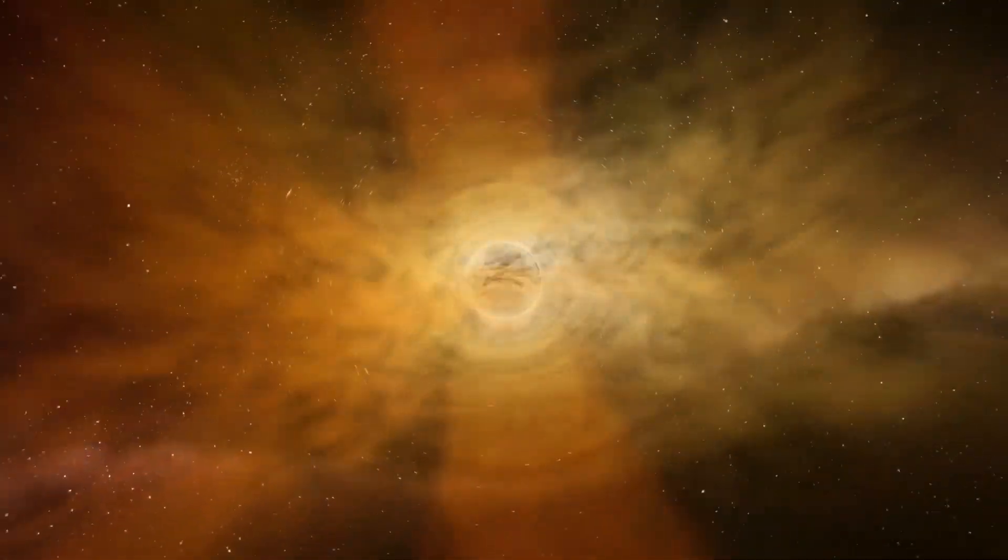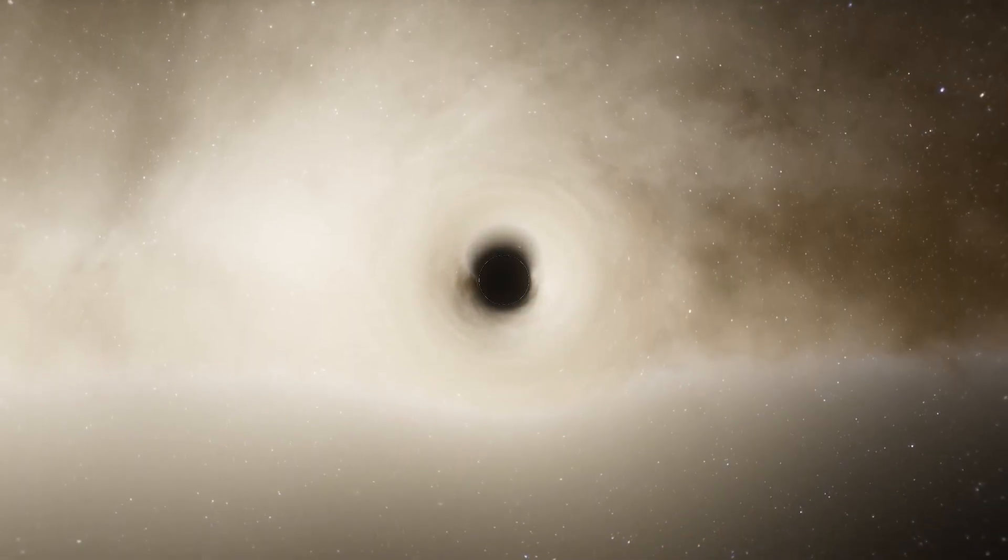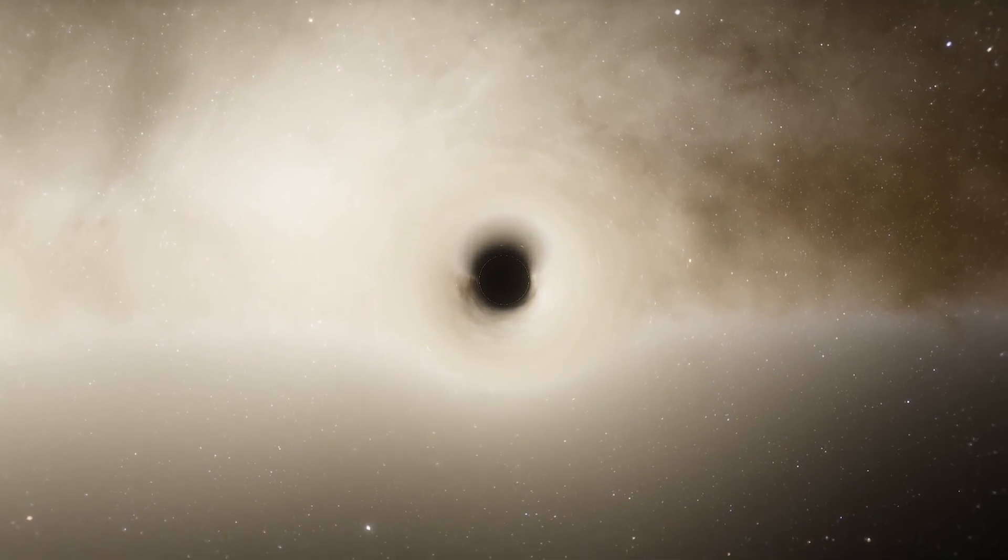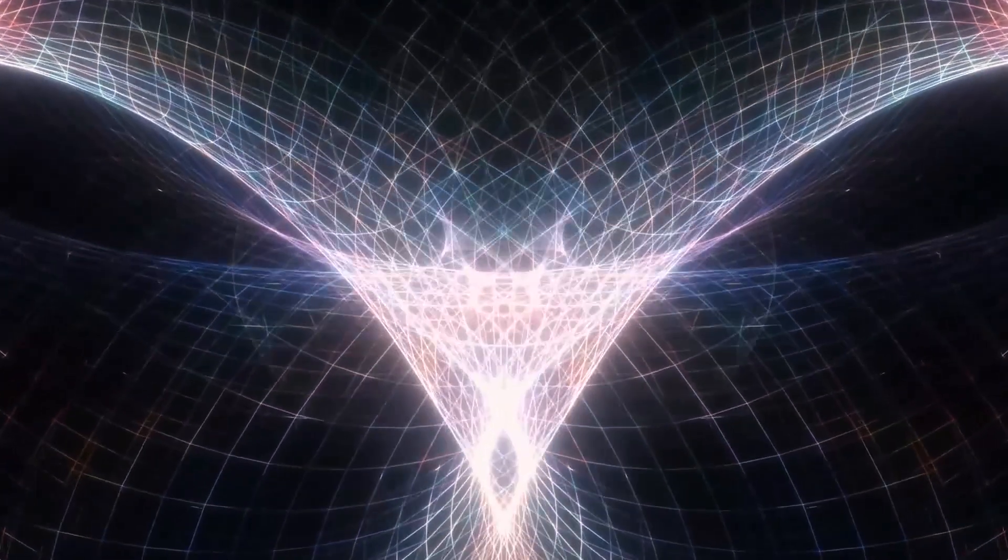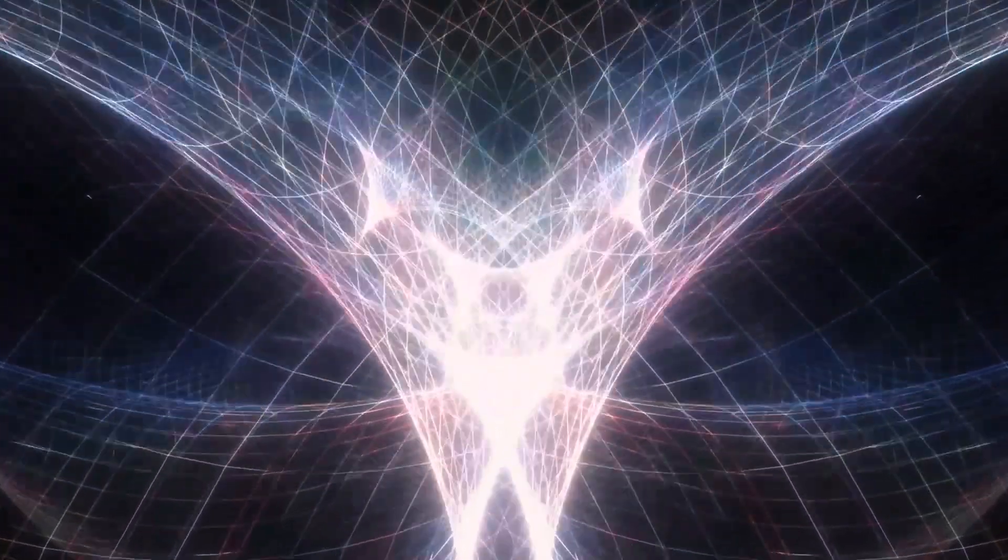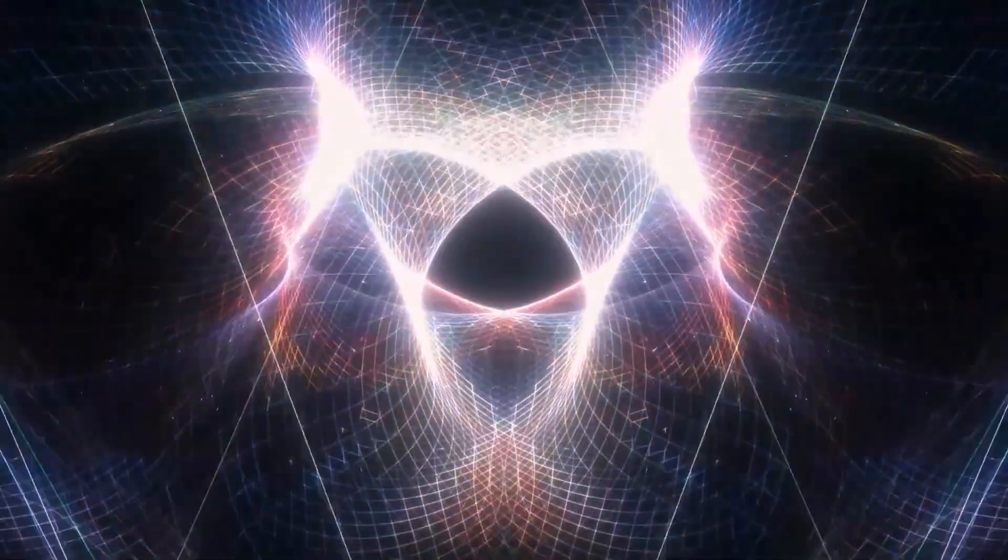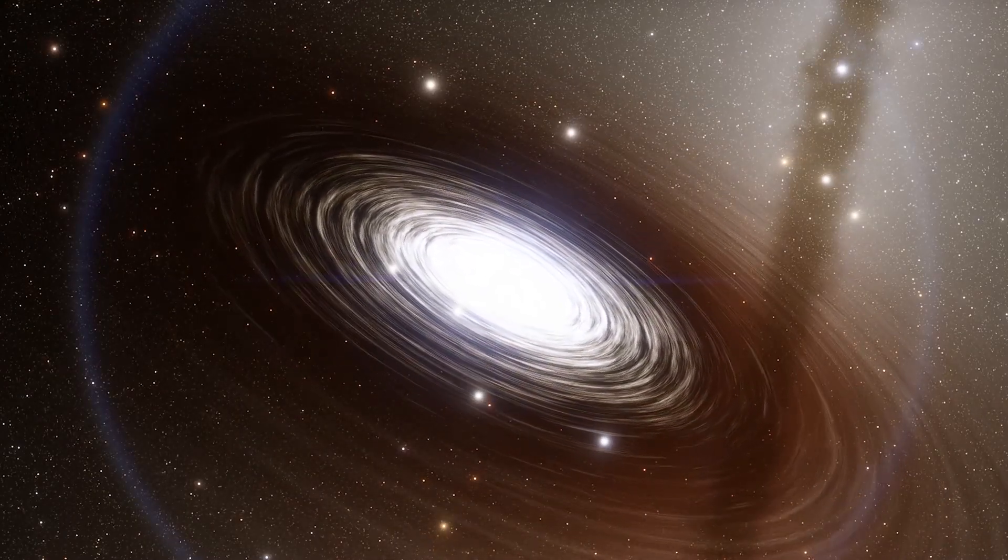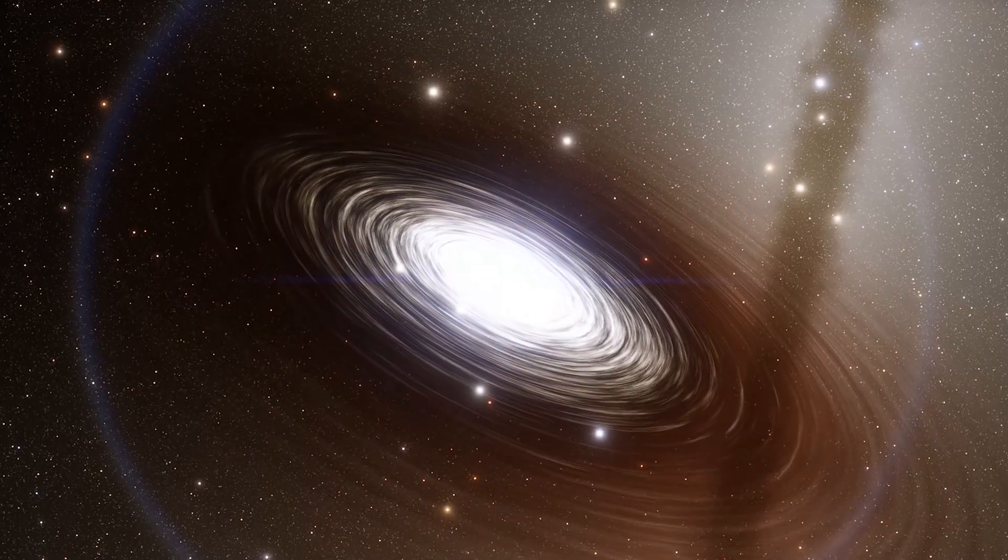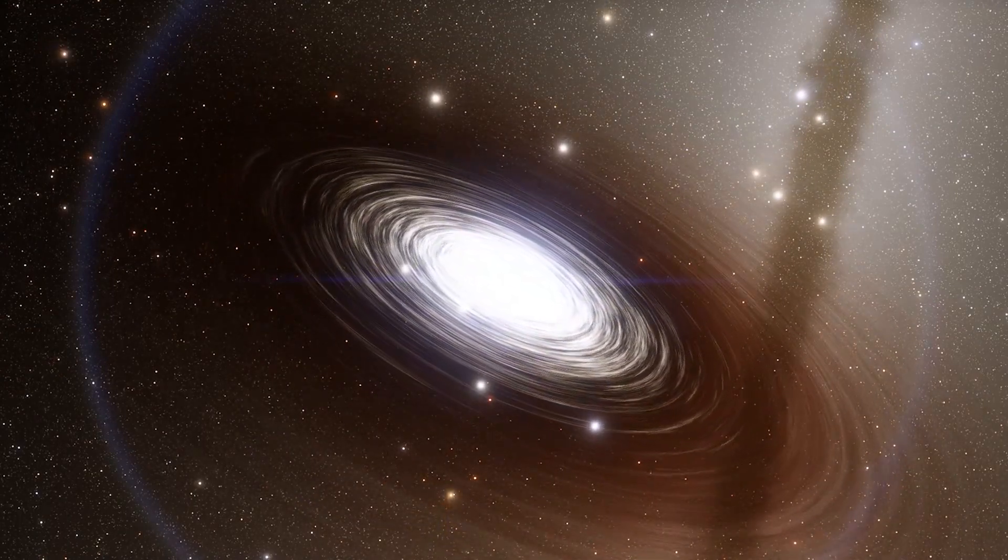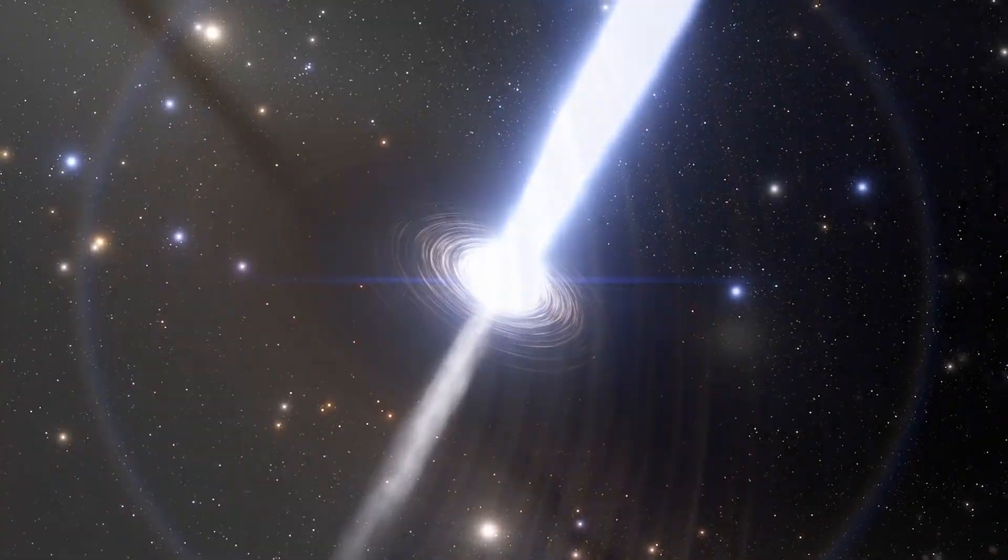Black holes can also cause time dilation, which is the slowing of time. They can stretch time, making it seem to move more slowly near the black hole, or squeeze time into a tiny fraction of what it should be. This occurs because anything that passes through a black hole's event horizon experiences a strong gravitational pull. The closer anything gets to the center of a black hole, the stronger this gravitational pull becomes until it reaches its maximum strength at the singularity point. This is because they distort the fabric of space and time itself.